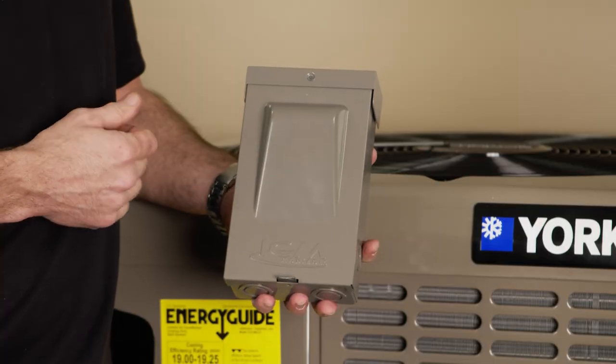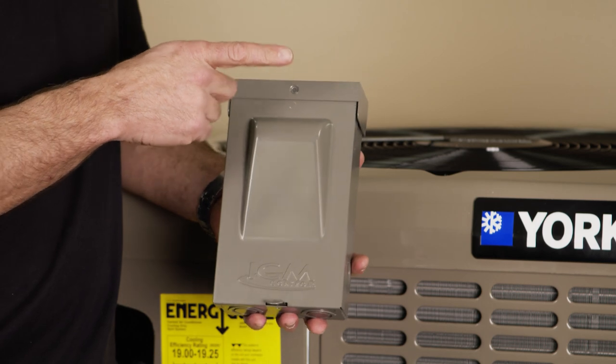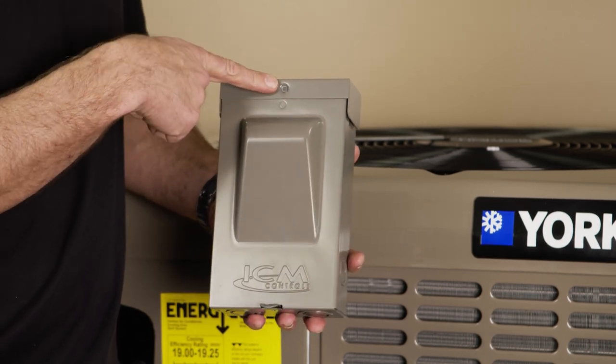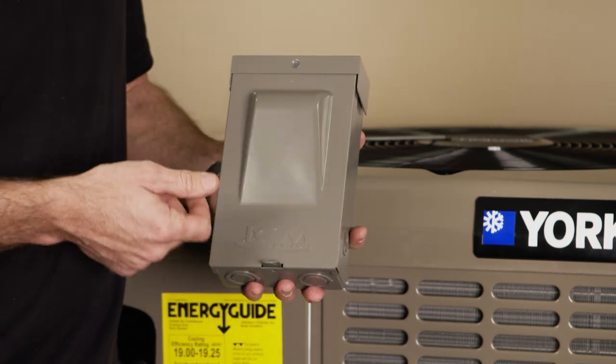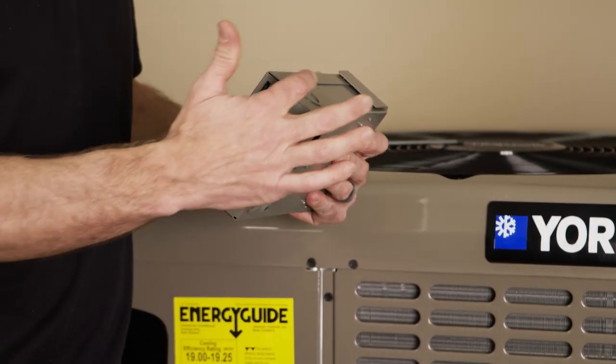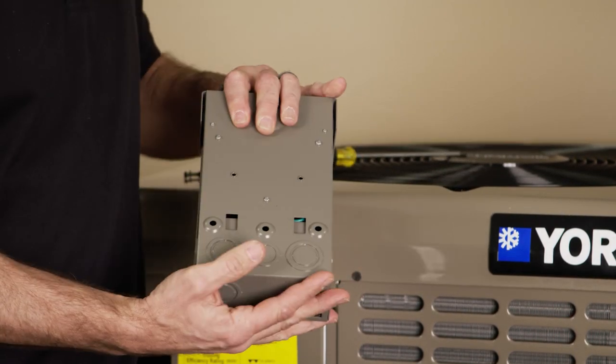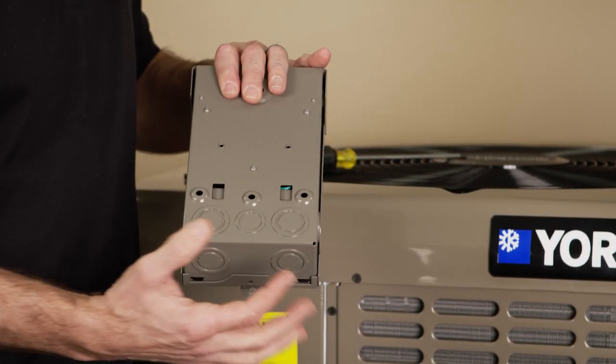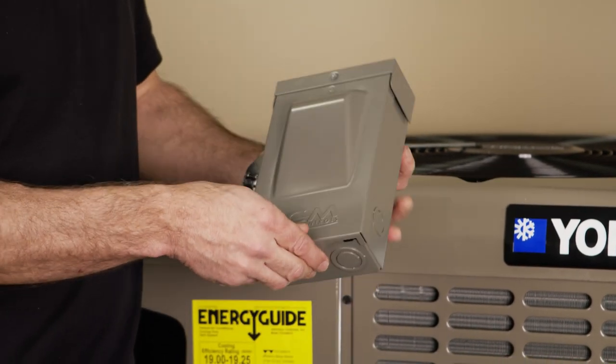So before we get into installation, let's check out some of the external features on the ICM 495. Right here you'll see there's a green LED indicator light that shows that you are protected against surge. There are several knockouts, four on the outside, three on the back, so you can pick however you need to get into the box with your wiring, whichever is easiest.